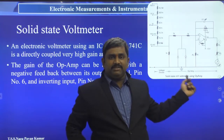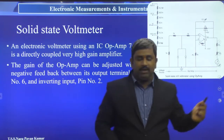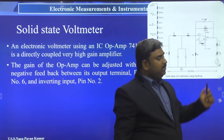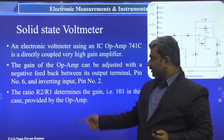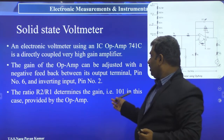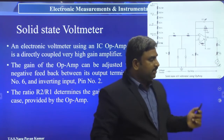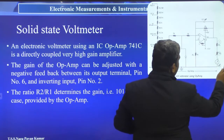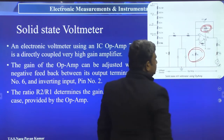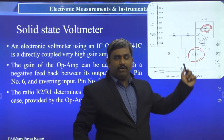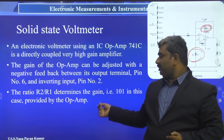Between pin 6 (output) and pin 2 (inverting input, the minus terminal), a negative feedback circuit is connected. The ratio R2/R1 determines the gain, which is 101 in this case. Here R1 and R2 are the feedback resistors whose ratio sets the op-amp gain.